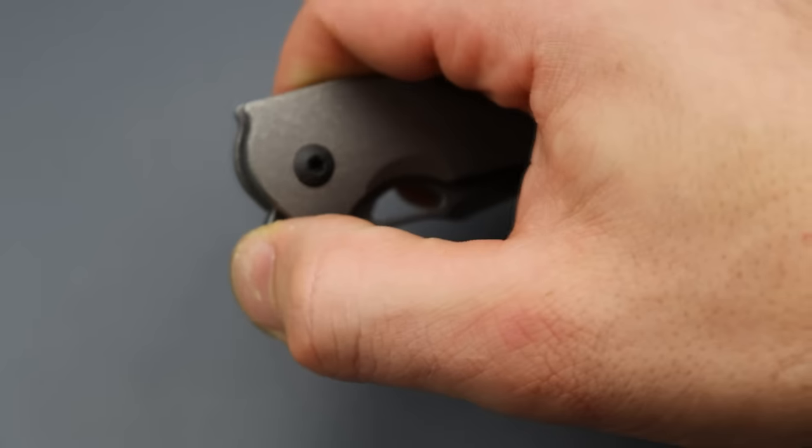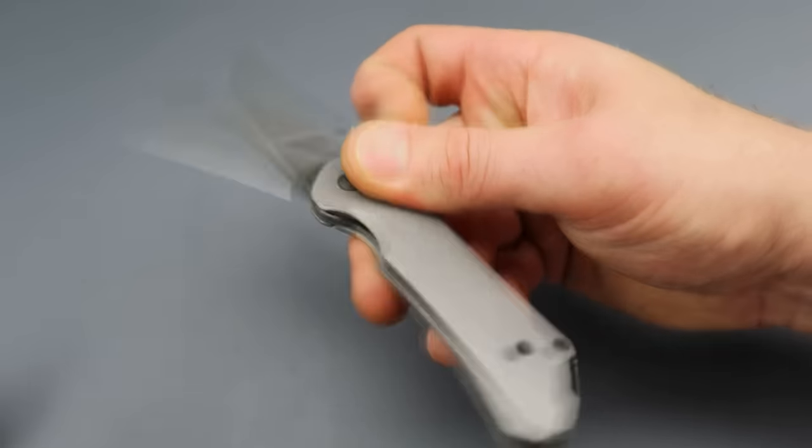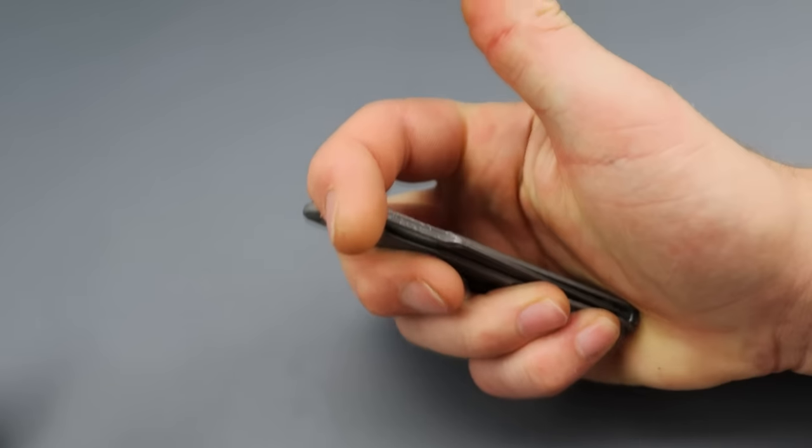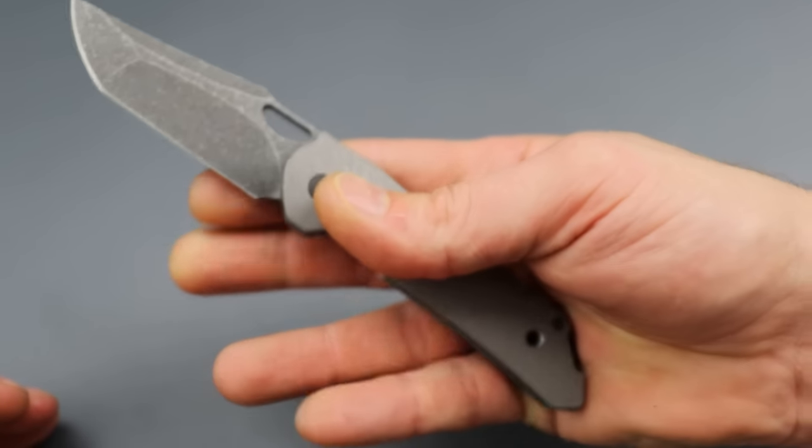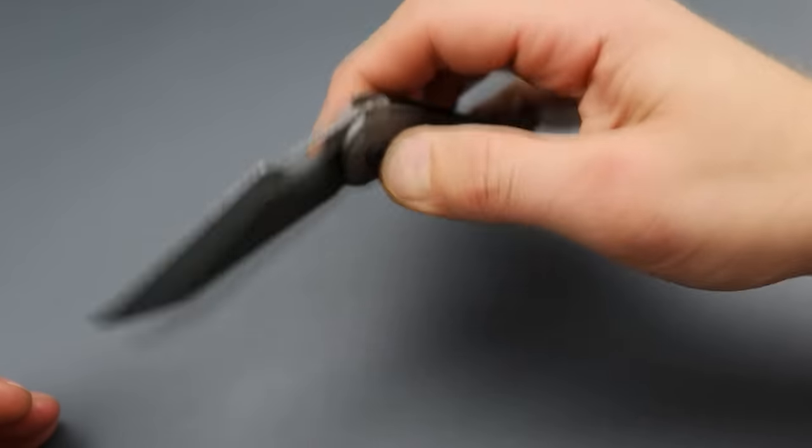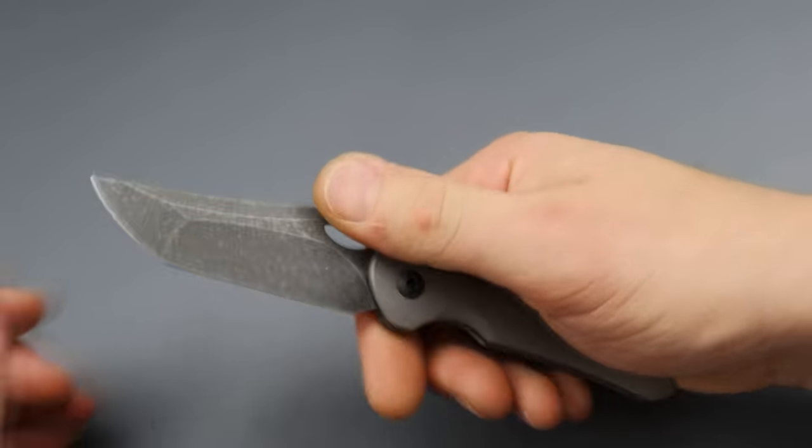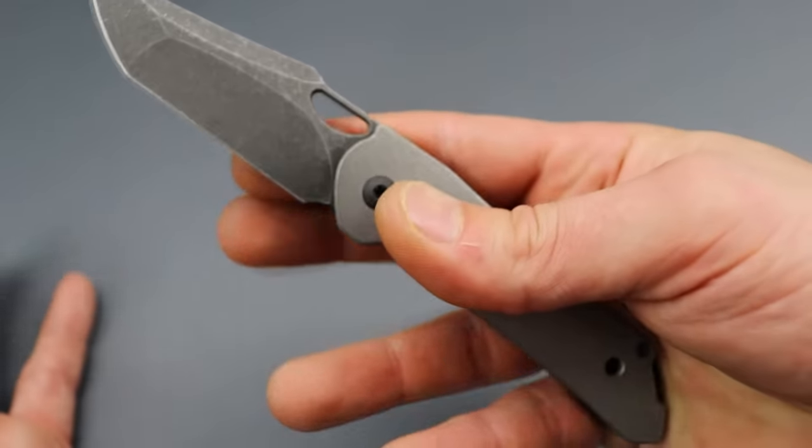You wouldn't expect this front flipper to be super good but it actually is. Great jimping, great texturing. The detent breaks right at the right time, so it's very easy to use. The hole deployment is the same thing. You can use just the skin of your finger or your nail. Both work really good. Obviously you can thumb flick it. It has just a nice breaking clicky detent.